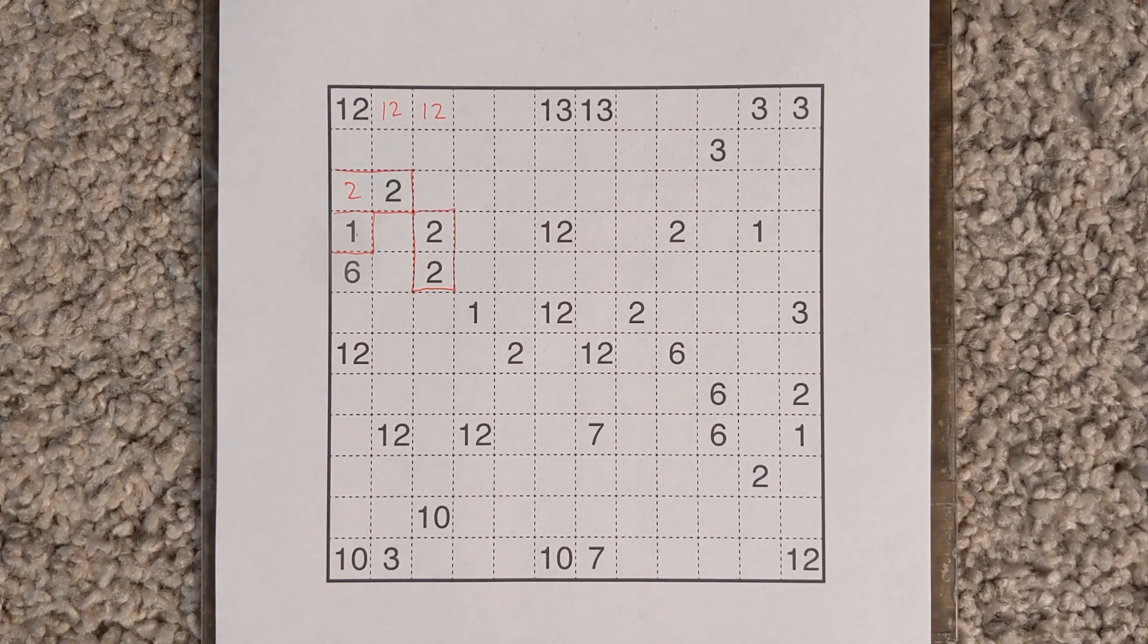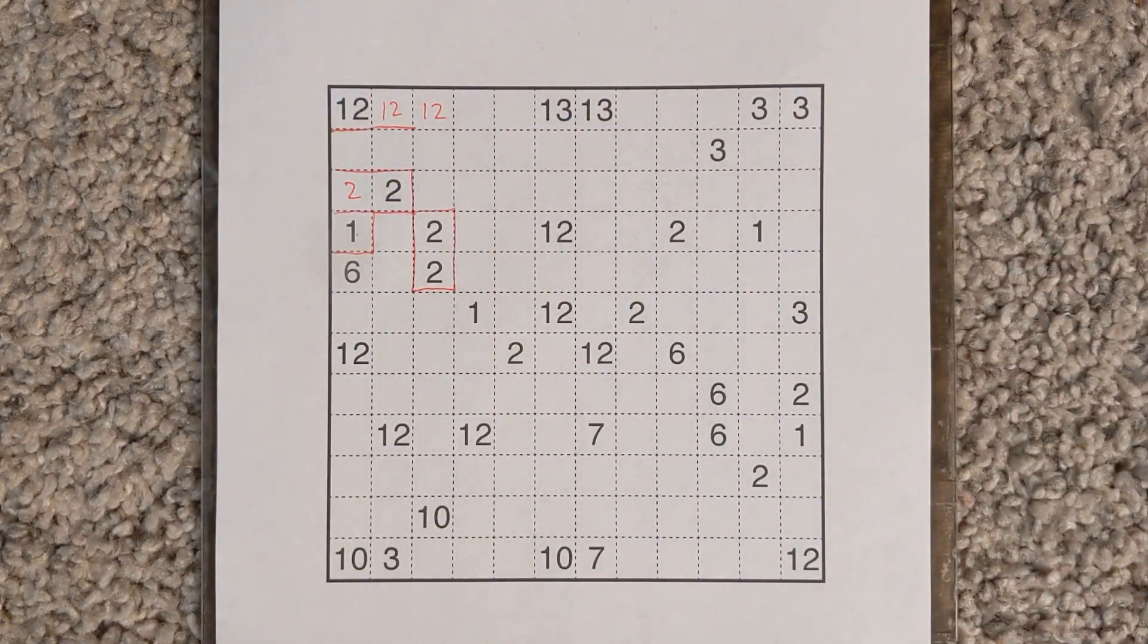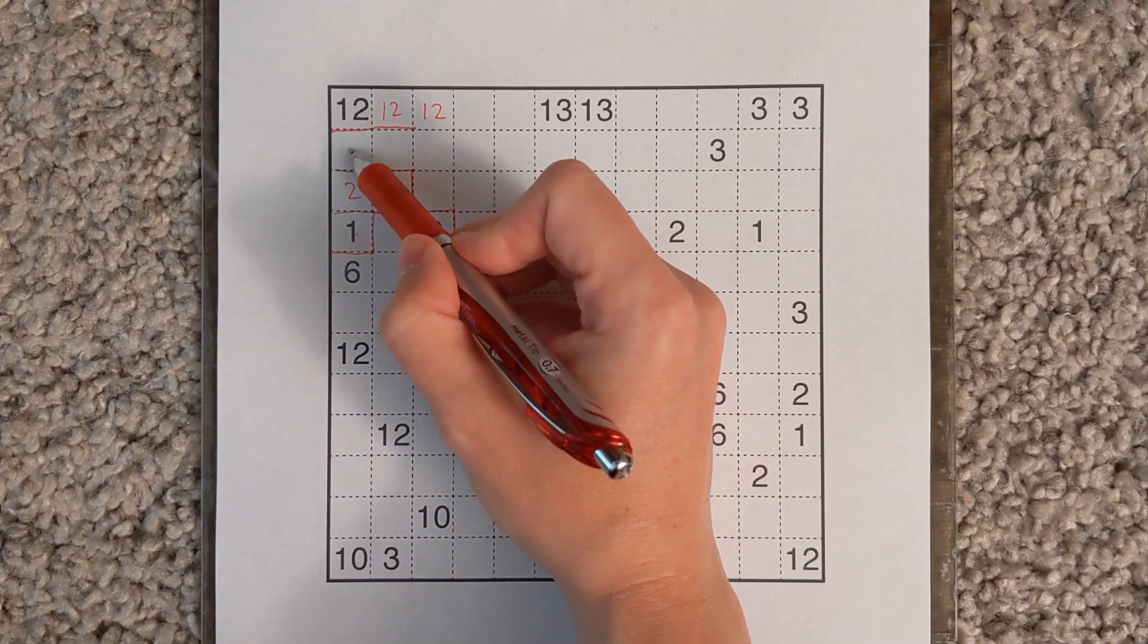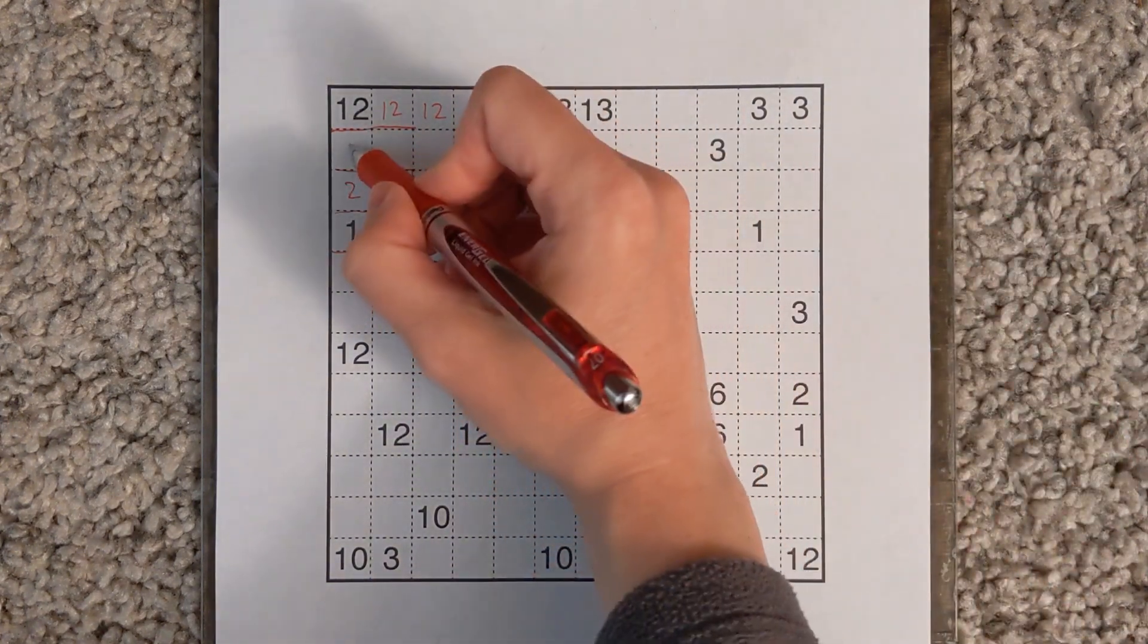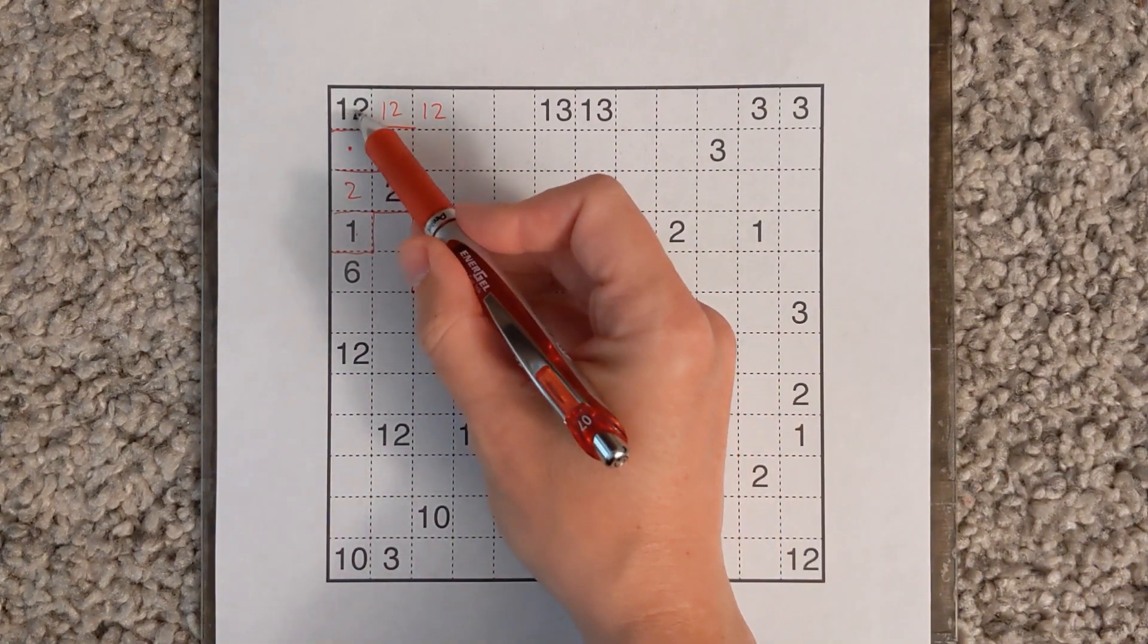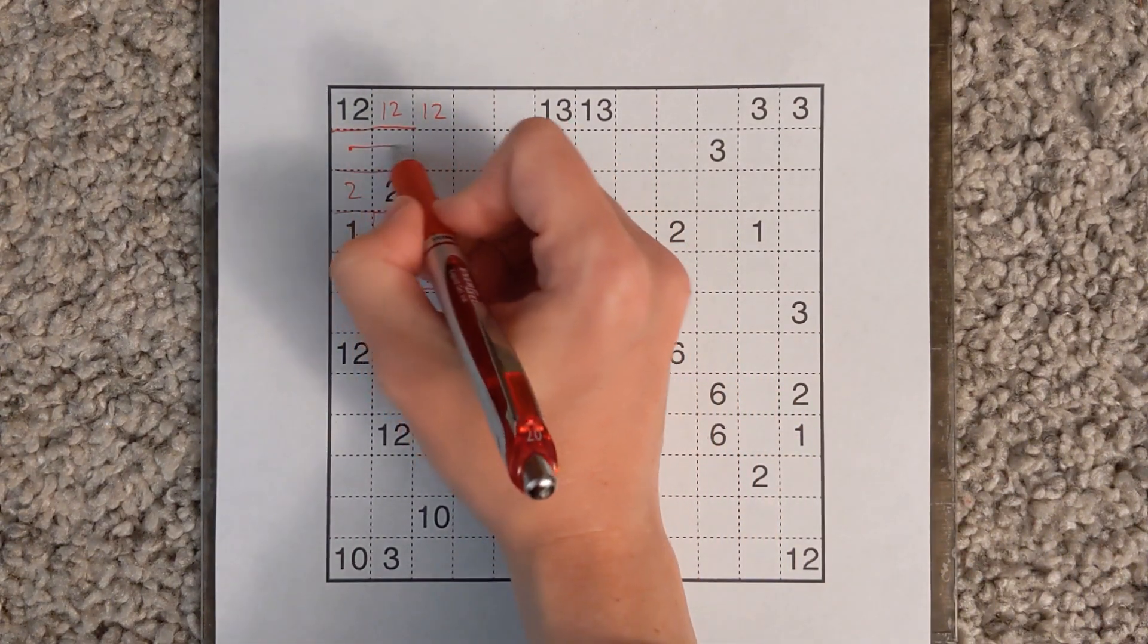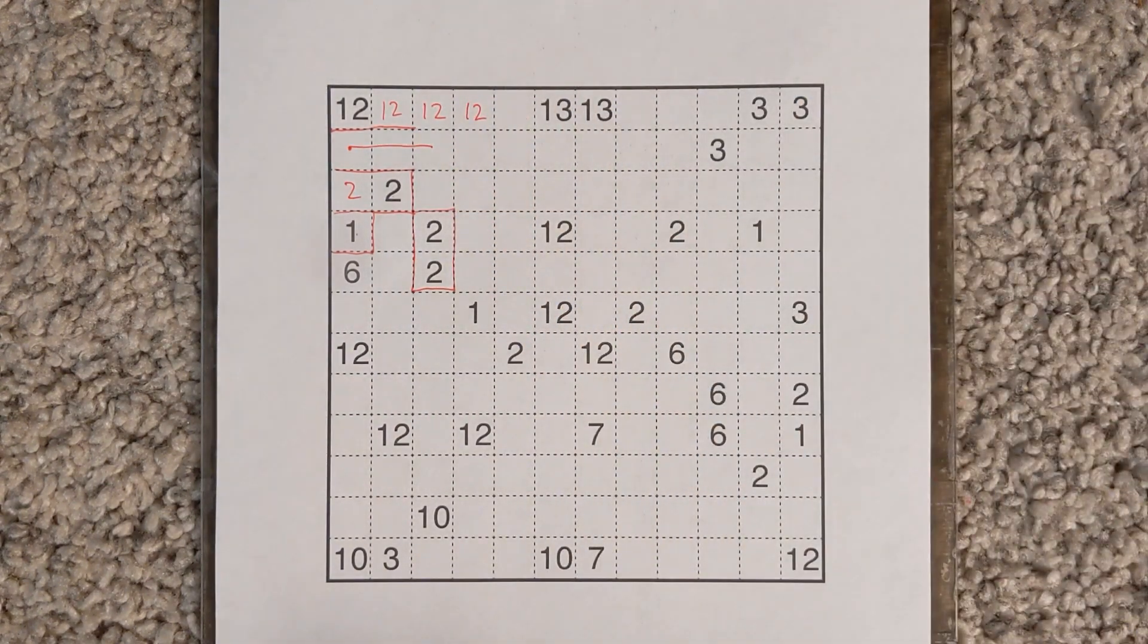And one interesting thing that that actually leaves, when we recognize we've now set up a hidden polyomino, is some of the ways hidden polyominoes can keep growing in size. This cell, for instance, can't be part of the 12 or the 2, so it's got to be a new shape. And it can't be one or two large because it's touching already those digits. And so we get a hidden polyomino that's at least three in size, and it quickly extends over the top to make this 12 go out further.